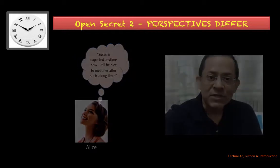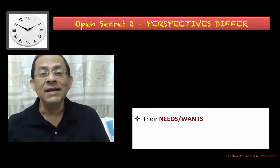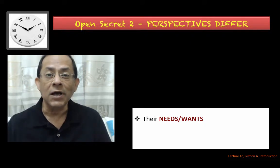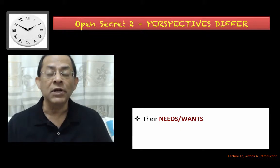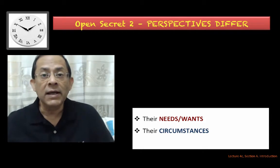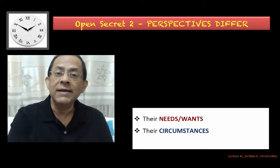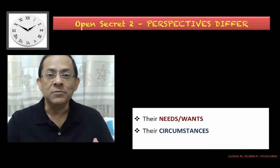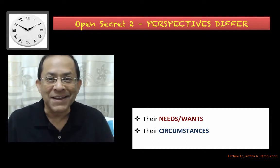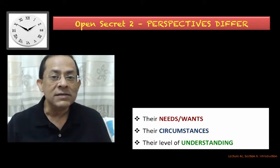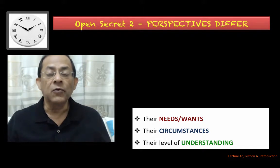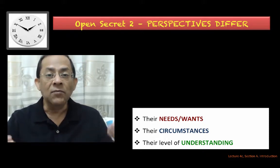So in selling, if you want to be successful, you need to understand the needs and wants. What does Alice want? To meet a friend she hasn't seen in a long time. What does Fatima want? To do well in her interview and be fresh and prepared. You need to understand what customers need, their circumstances, and their level of understanding of your product or service — because the way you offer the product will depend on all of that.